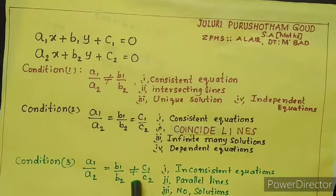equal to b1 by b2, but not equal to c1 by c2. They are called inconsistent equations, means they have no solutions. The graphical representation is parallel lines, they have no solution. Remember these three conditions and go for the problem now.